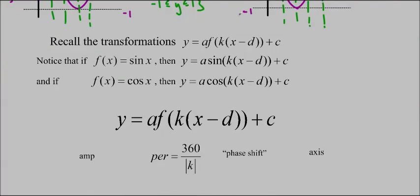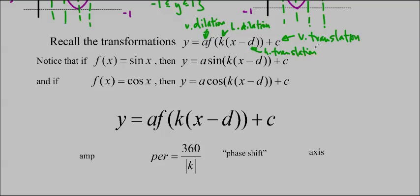So remember that the transformations are y equals a f of kx minus d plus c, where a is the vertical dilation, k is the horizontal dilation, so dilations are flips, stretches, and compressions. D is the horizontal translation, so moving left and right. And c is the vertical translation, moving up and down. So when we're talking about sine and cos, we can just replace the f of x with sine, so it becomes a sine k of x minus d plus c, or we can replace it with cos, and then we get y equals a cos k x minus d plus c.